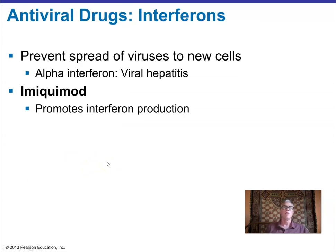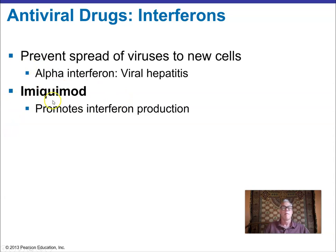To prevent viral spread to new cells, alpha interferon signals neighboring cells not to become infected. Imiquimod is a chemical that promotes interferon production, ramping up that process to help prevent the spread of viruses.